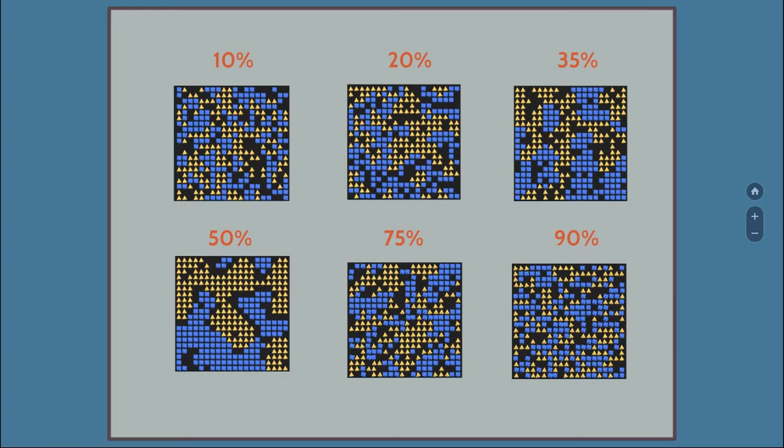But you can see that when they have only 35% preference for people like them to live around, you end up with segregated neighborhoods. To say that one in three of my neighbors should be similar to me so I'm not a crazy minority—to say those people hate each other is quite an overstatement. If you basically just don't want to be a minority, you have a super segregated neighborhood.